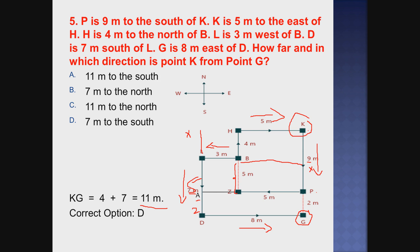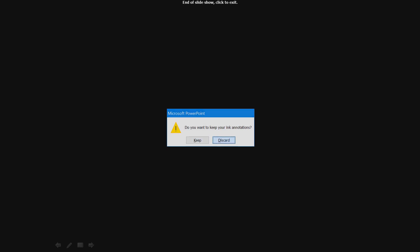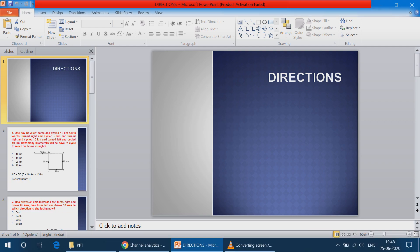In which direction is K from G? From the question and diagram, K is in the south position relative to G - that is 11 meters to the south. The correct option is A. That's all for today's video - please like, share, and subscribe, and click the bell icon.